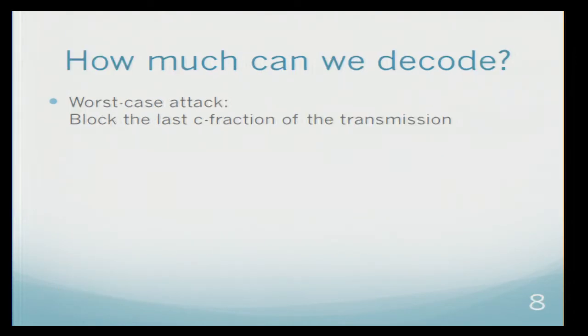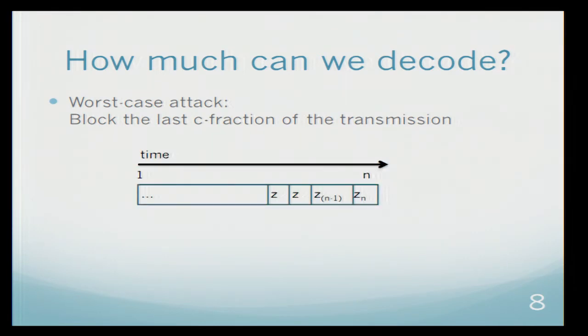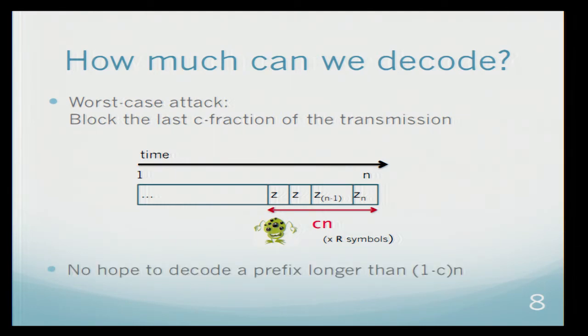Now let me begin with a simple observation and ask how much can we decode at all? Consider the following situation. Assume that at some time n, that's the stream that Alice sent over to Bob. And then the adversary comes and completely corrupts the last cn symbols. It's kind of clear that there is no hope to decode more than a prefix which is longer than 1 minus cn.